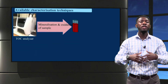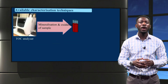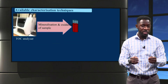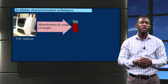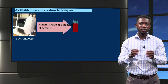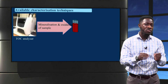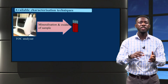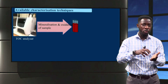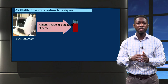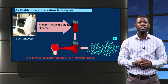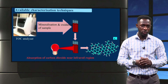We can equally measure the total organic carbon of NOM with a TOC analyzer. Here, the sample is first mineralized and then oxidized to convert the organic carbon to carbon dioxide, which absorbs light near the infrared region.